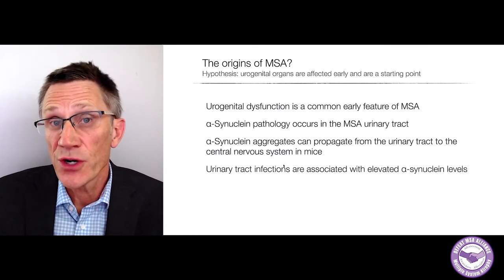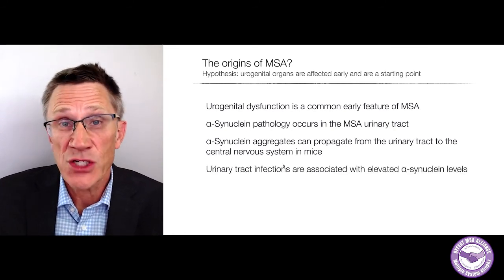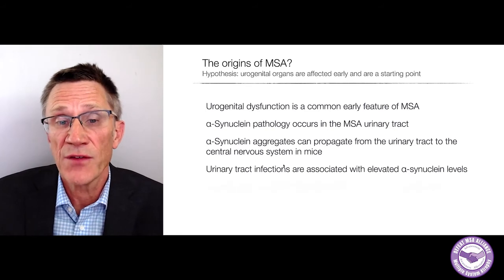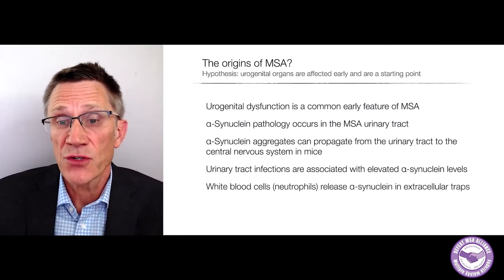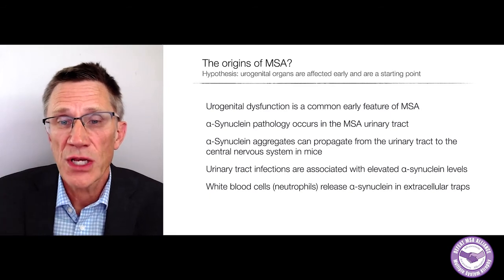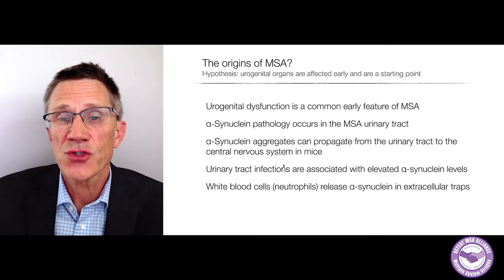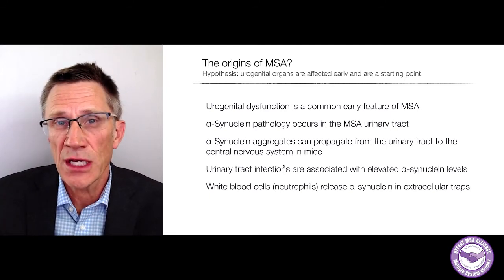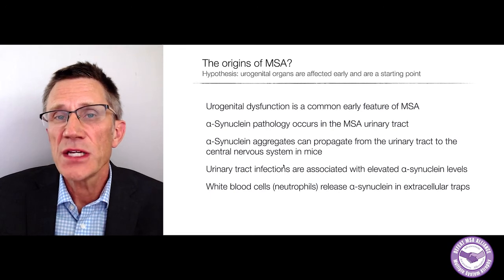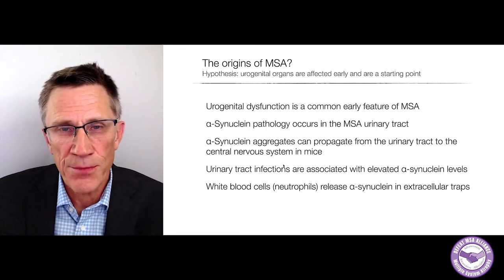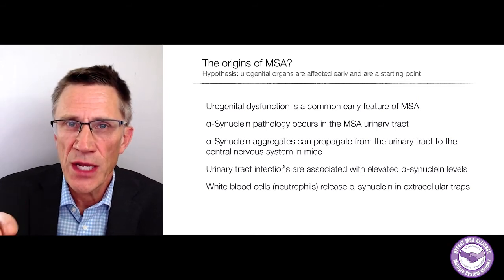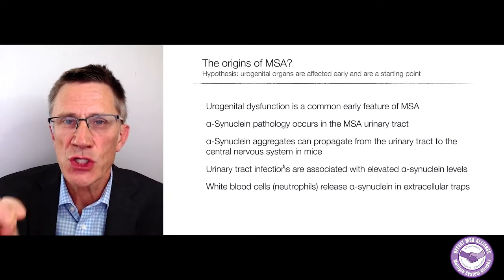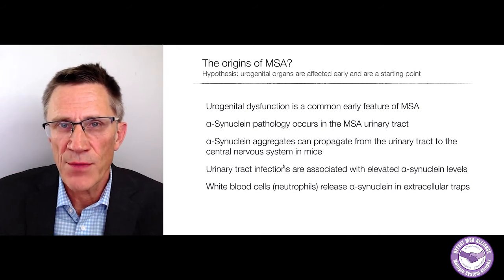We know that urinary tract infections in mice are associated with elevated synuclein, and white blood cells called neutrophils can release synuclein in so-called extracellular traps as they try to kill bacteria. These ideas support the hypothesis, but a lot more research is needed to understand whether urinary or genital infections could be a starting point for MSA.